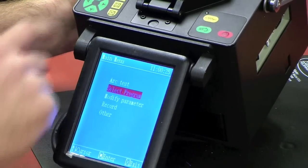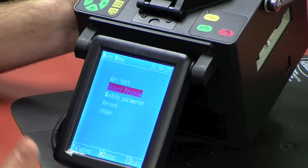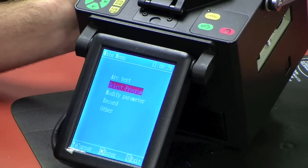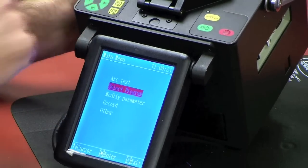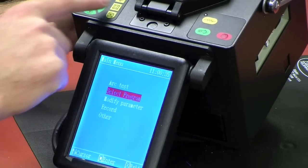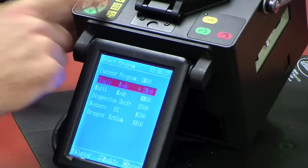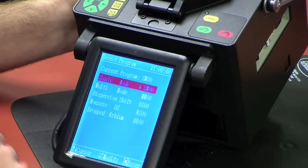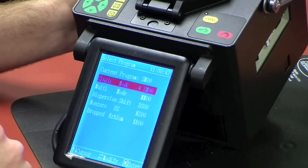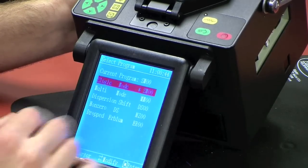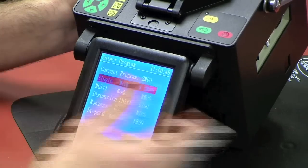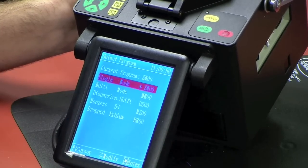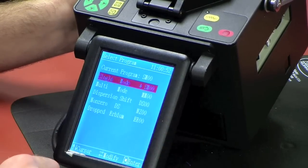Next is Select Program. Program is if you're switching from multi-mode or single-mode or non-zero dispersion fiber. We're going to go here, and once you have it highlighted, you'll select Program again and click on it. And here we have our single-mode, multi-mode, non-zero dispersion, dispersion shift fiber. Just basically your different types of fiber. So we're splicing indoor single-mode fiber. So we'll leave it on single-mode.